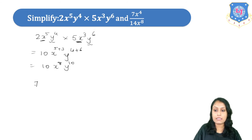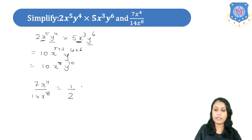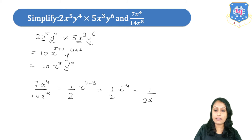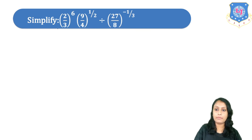The second example is 7x raised to 4 upon 14x raised to 8. First we simplify the numbers: 7/14 gives 1 upon 2. Then we bring x raised to 8 to the numerator, giving x raised to 4 minus 8, which is x raised to minus 4. Since it is x raised to minus 4, we rewrite it as 1 upon x raised to 4, giving 1 upon 2x raised to 4.